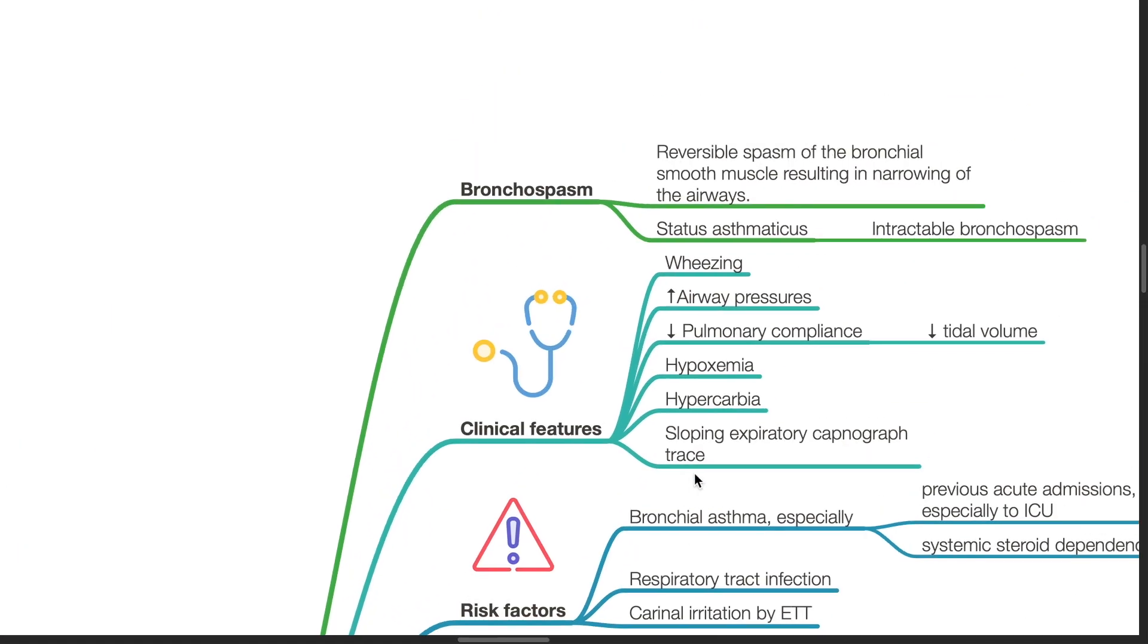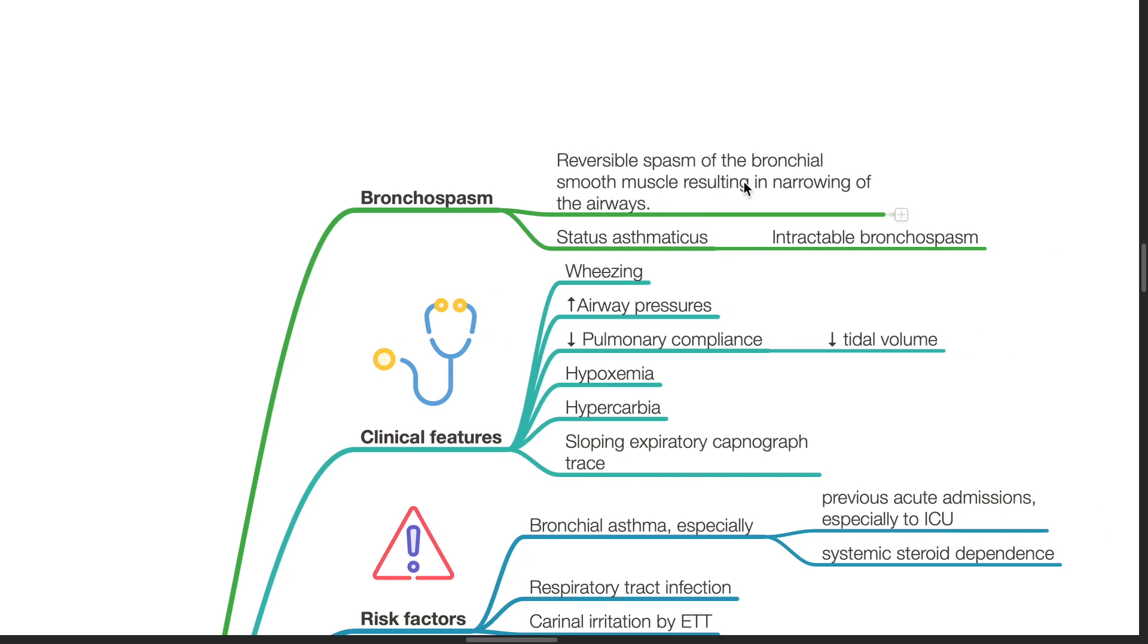Bronchospasm is a reversible spasm of the bronchial smooth muscle resulting in narrowing of the airways. Status asthmaticus is intractable bronchospasm.